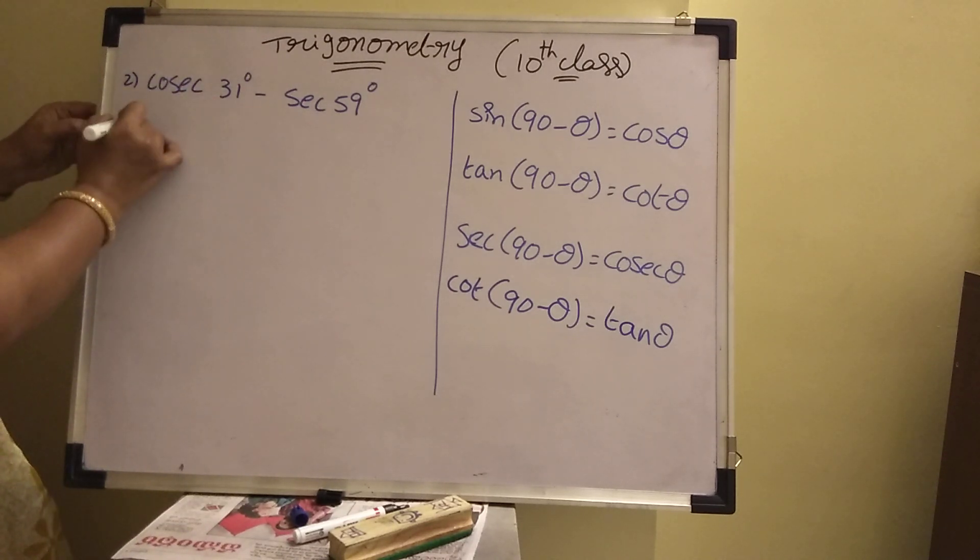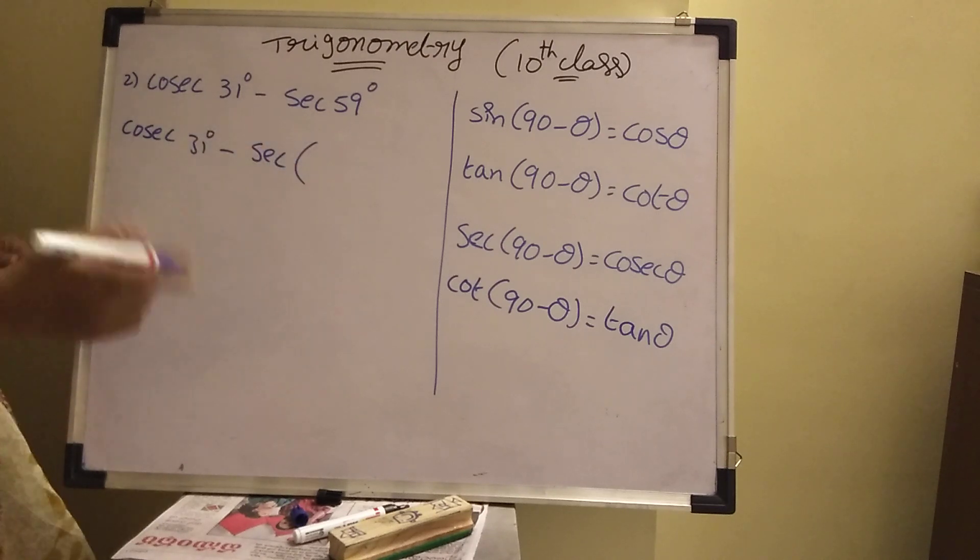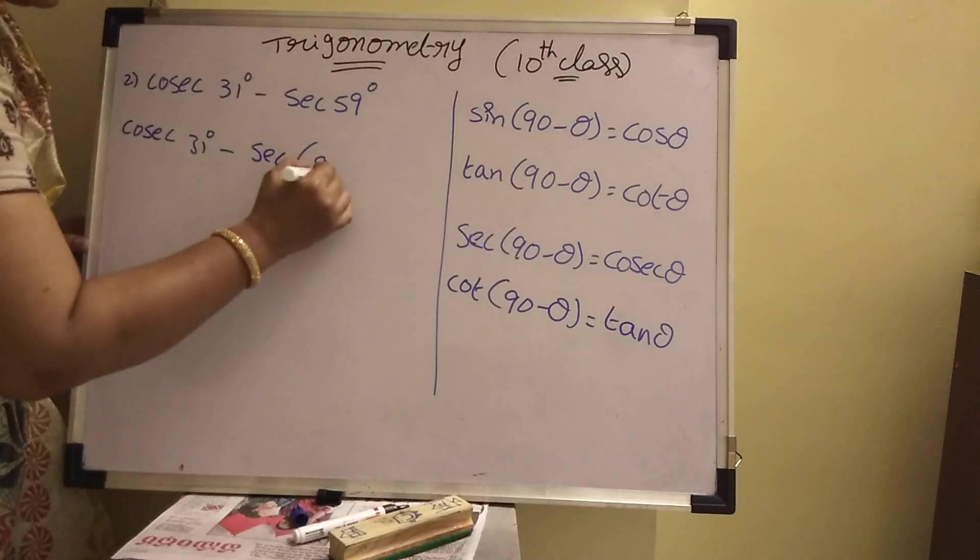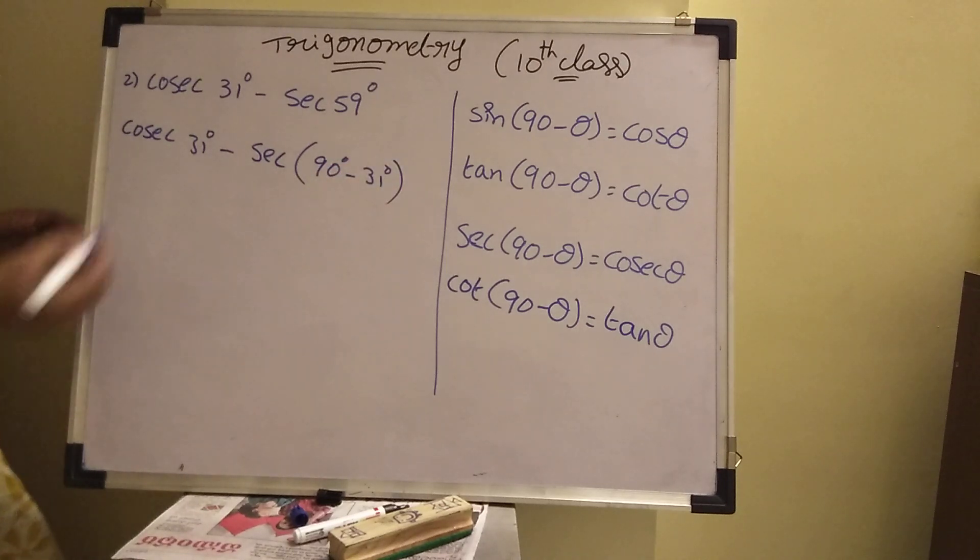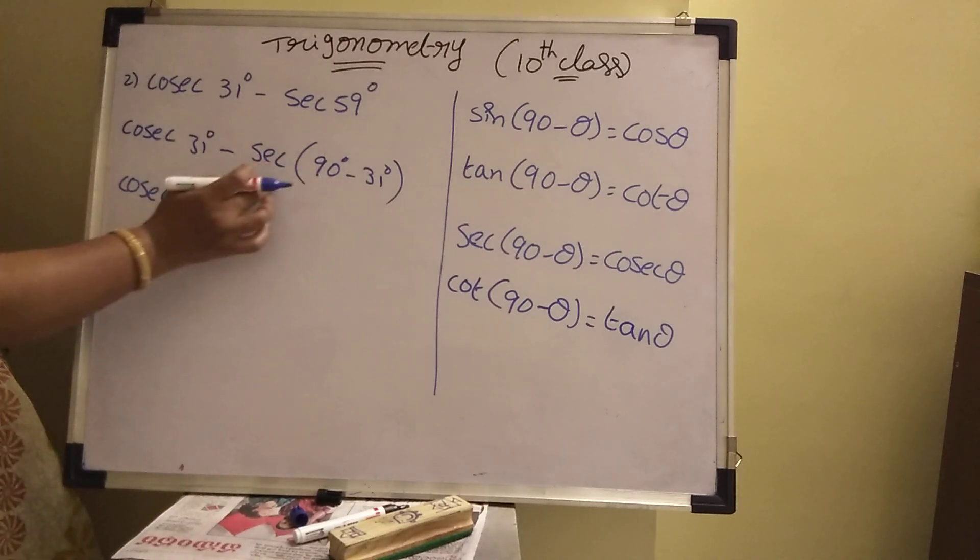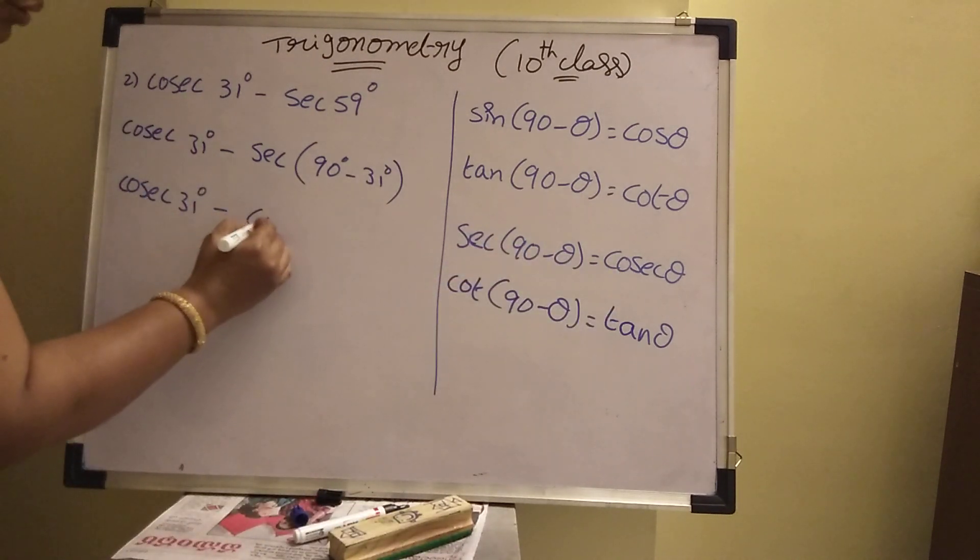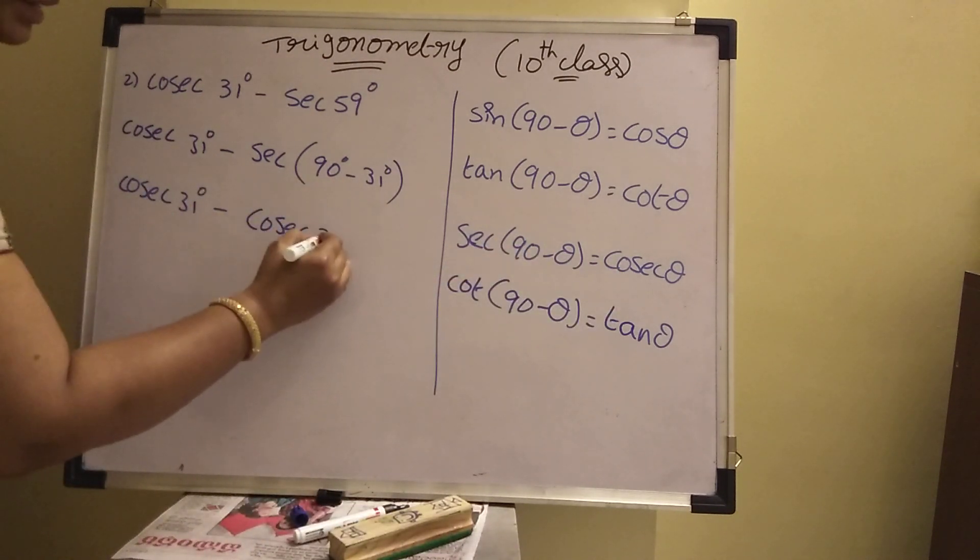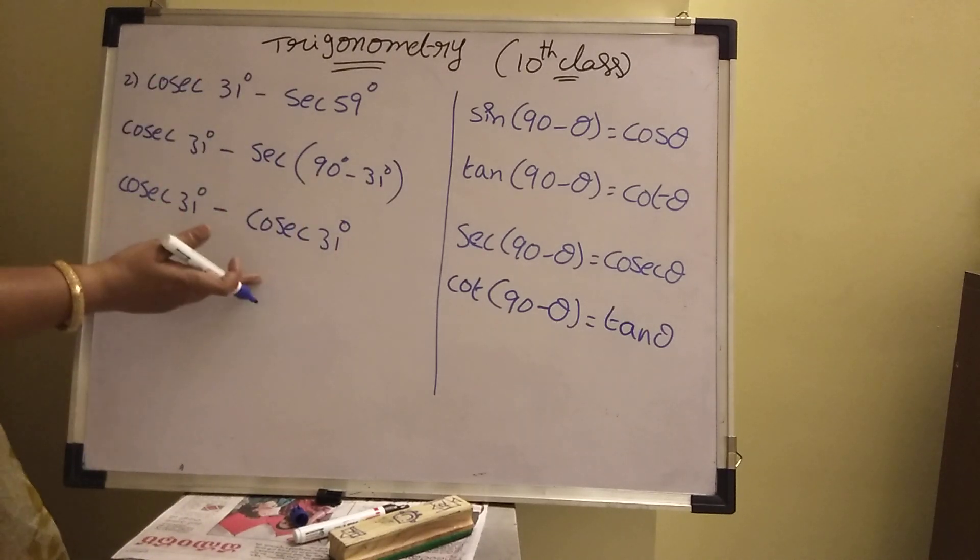Cosecant 31 as it is, you write. Cosecant 31 degrees minus secant of 90 minus 31 degrees. Now, cosecant 31 degrees minus, secant of 90 minus theta, secant is there. Then function change it. It will be cosecant of 31 degrees. 90 is there. That's why, the function will be cosecant theta.